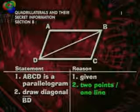Our first step is to state our given information: ABCD is a parallelogram. Now we need to set up some triangles, so we draw diagonal BD as our second step. Our reason is that through any two points there is exactly one line. Now we have two triangles, ABD and CDB.